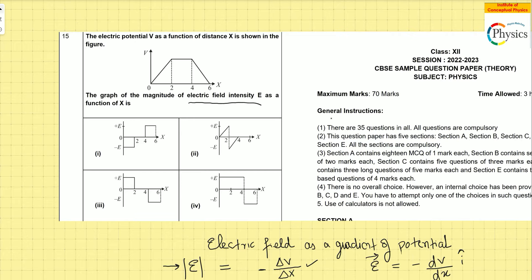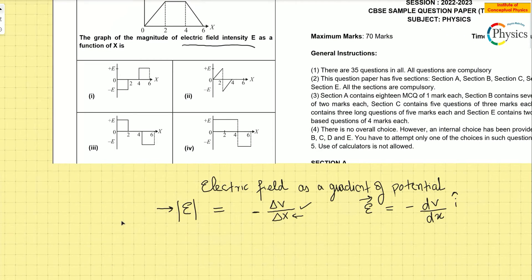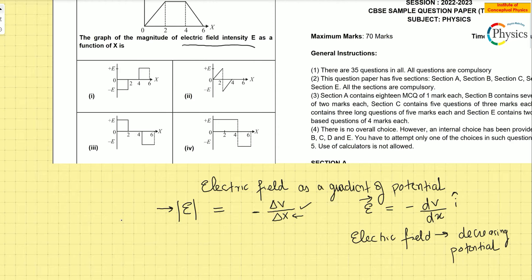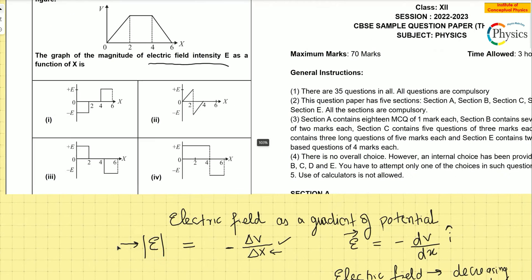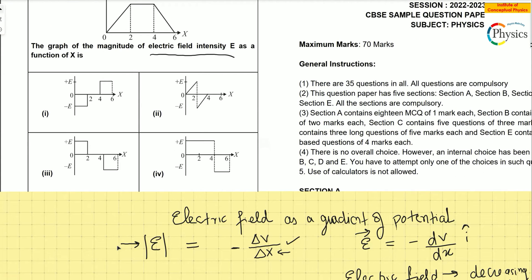This particular expression is called the gradient — the change in potential divided by the distance moved in the space where the potential is changing. The negative sign is there because the direction of electric field is always in the direction of decreasing potential. So if you find an increasing potential scenario, the electric field will be opposite of that.